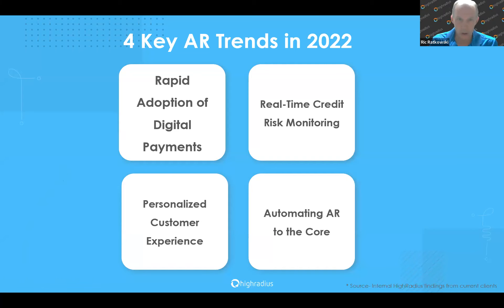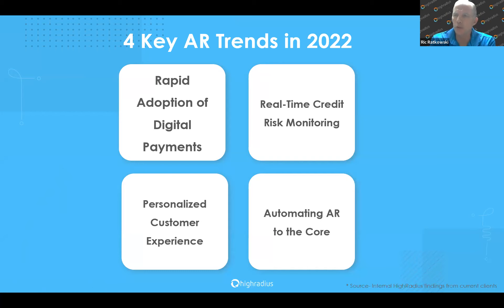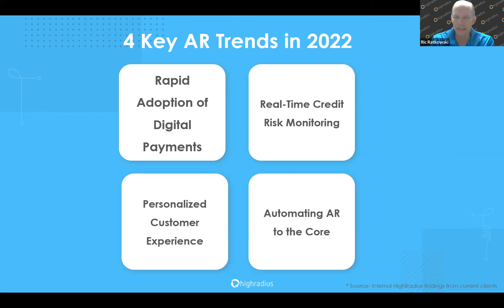I'm going to talk about the key AR trends — there are four of them from our customers. First is the rapid adoption of digital payments. Second, real-time credit risk monitoring is key. Third, personalized customer experience — it's all about helping the customer be more efficient. And fourth, automating accounts receivable to the core — really handling all the details. That's what we're going to go over.